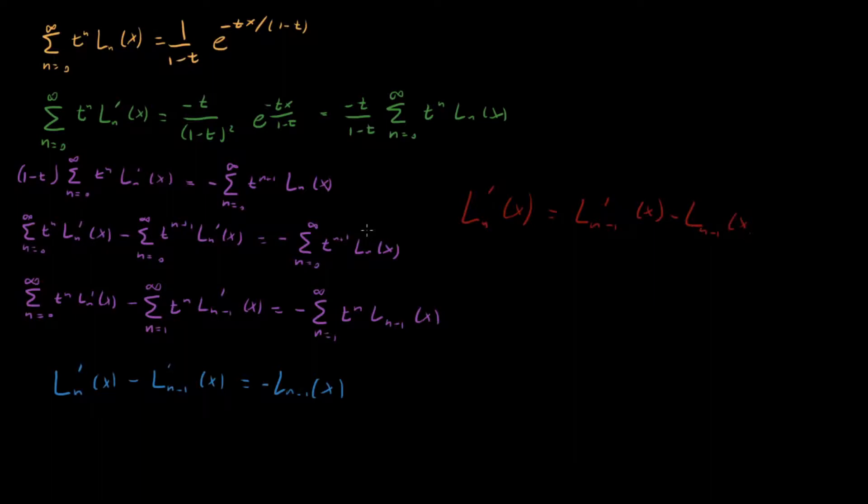This is actually a very nice, very clean recurrence relationship that we have right here. Because what are we saying? We're saying that if you want to get the derivative of your nth Laguerre polynomial, all you need to know is your previous Laguerre polynomial. Then if you take the difference of its derivative with itself, then you get the next one. It's not often that you find something as nice as this.